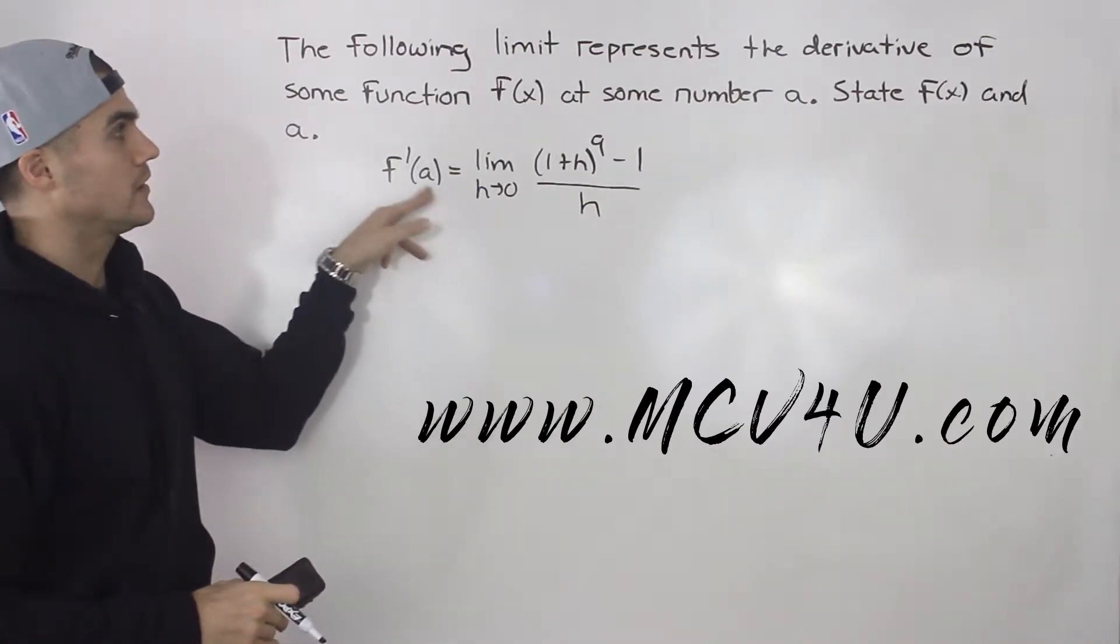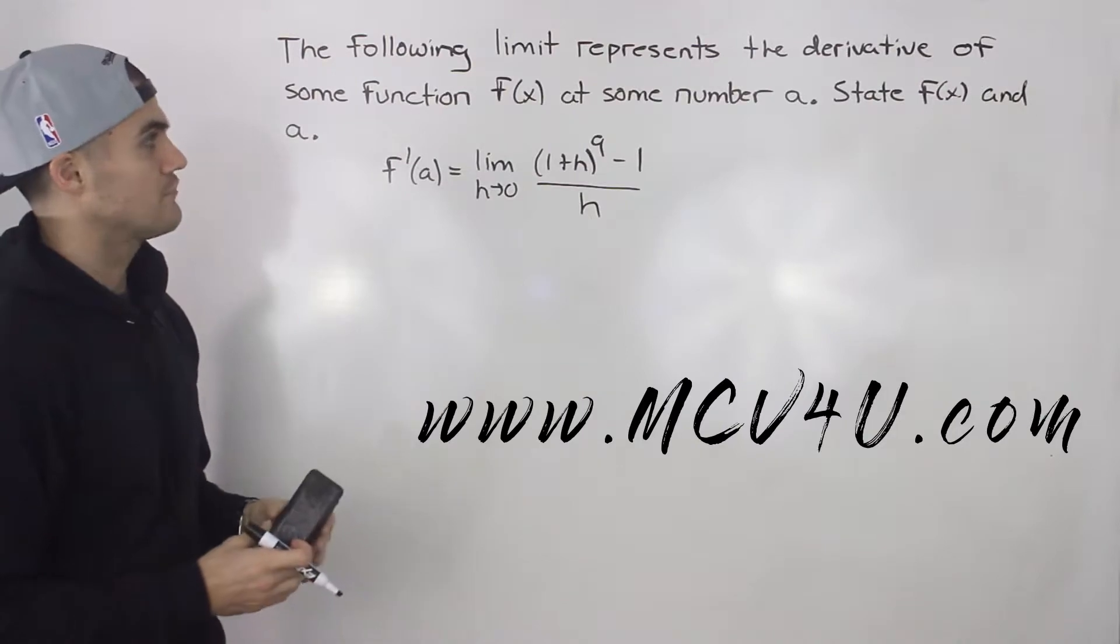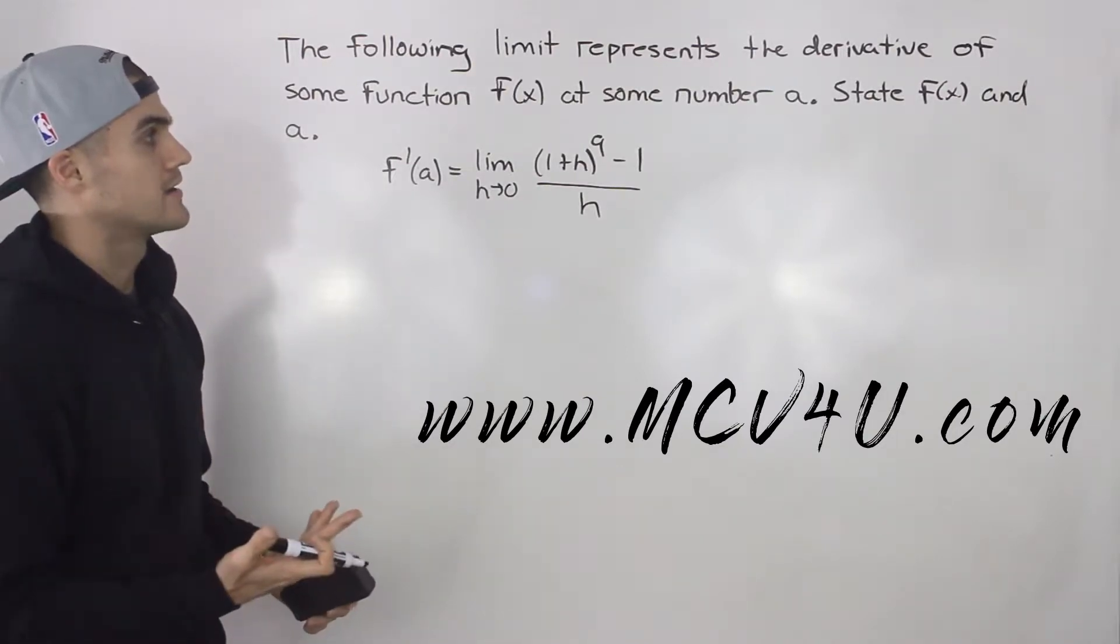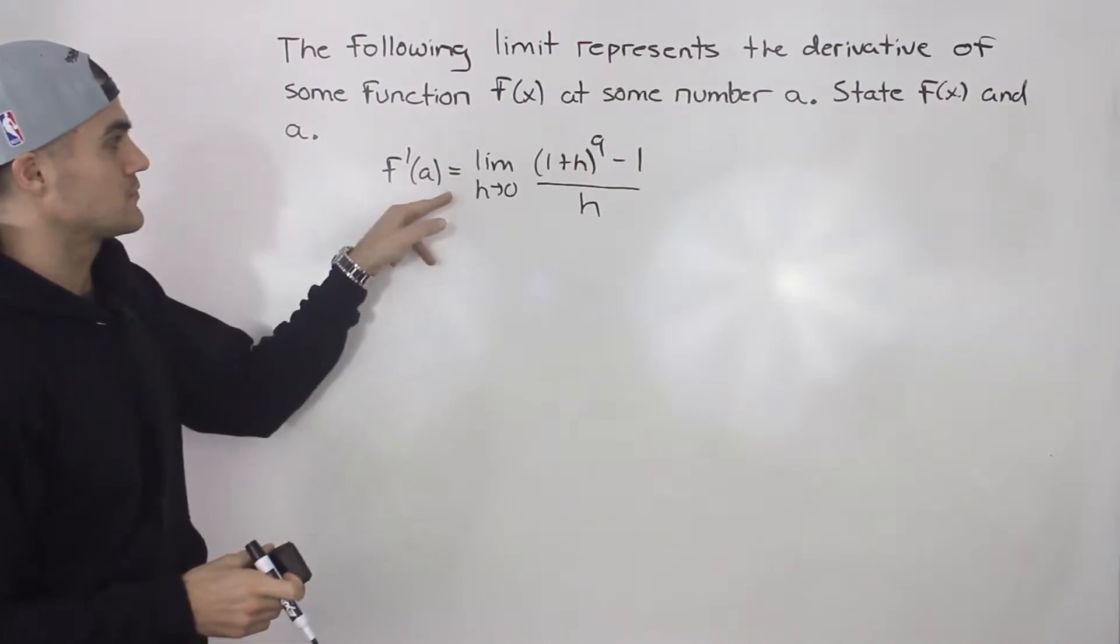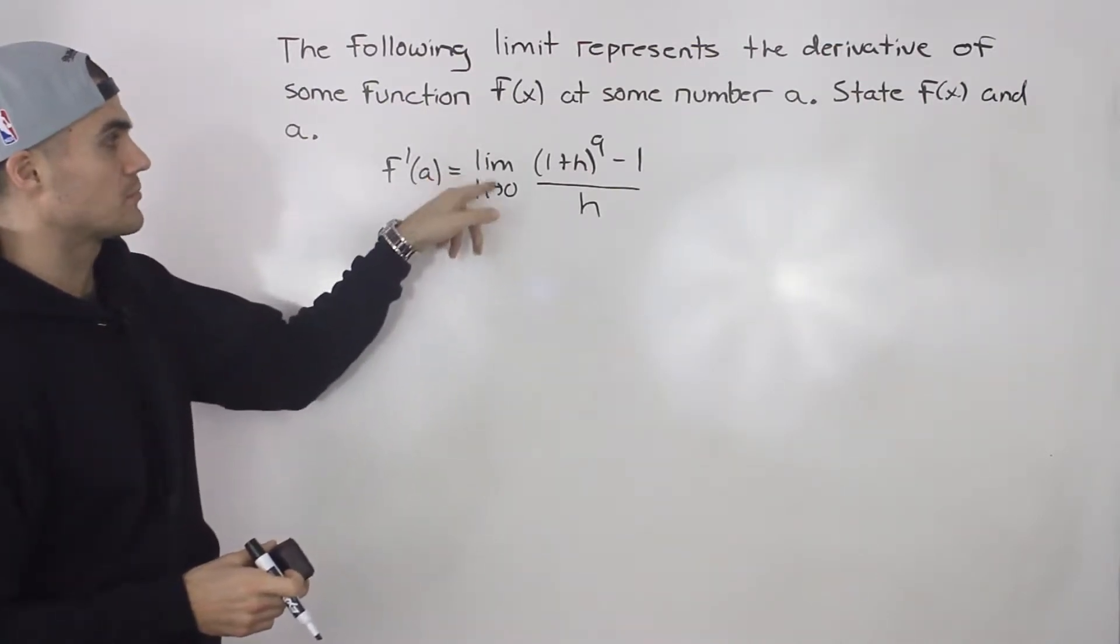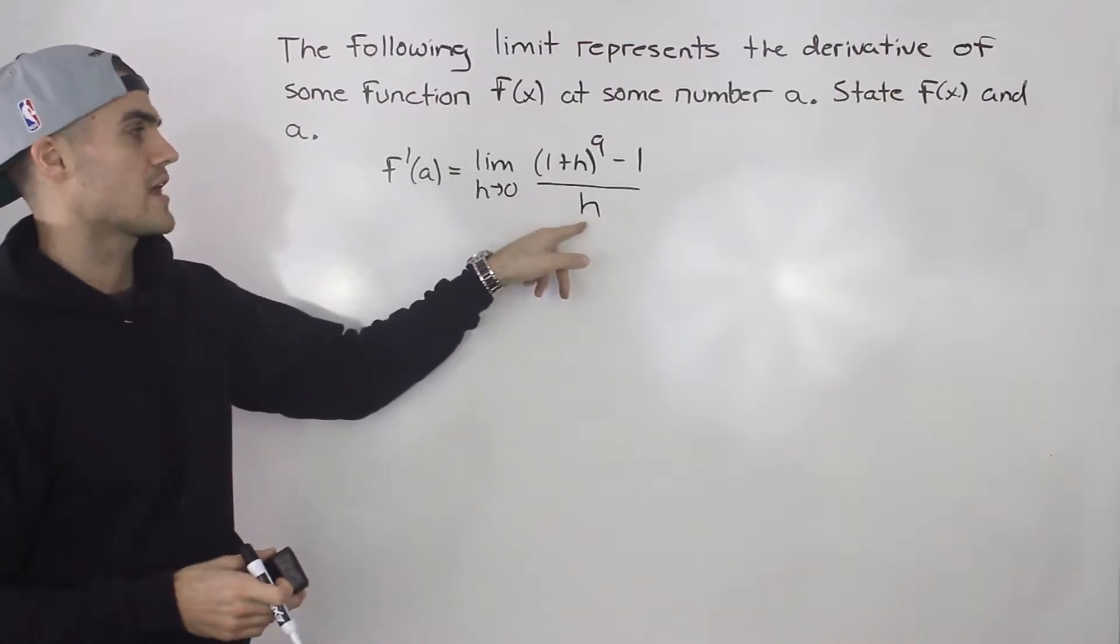So we have the following limit that represents the derivative of some function f(x) at some number a. State f(x) and a. We got f'(a) equals the limit as h goes to 0, (1+h)^9 - 1 all over h.